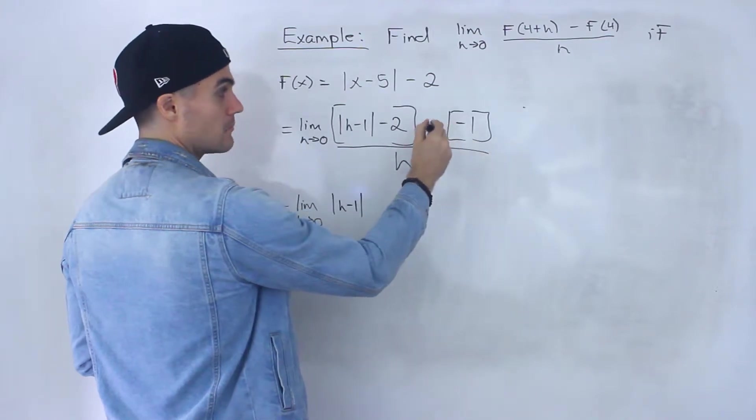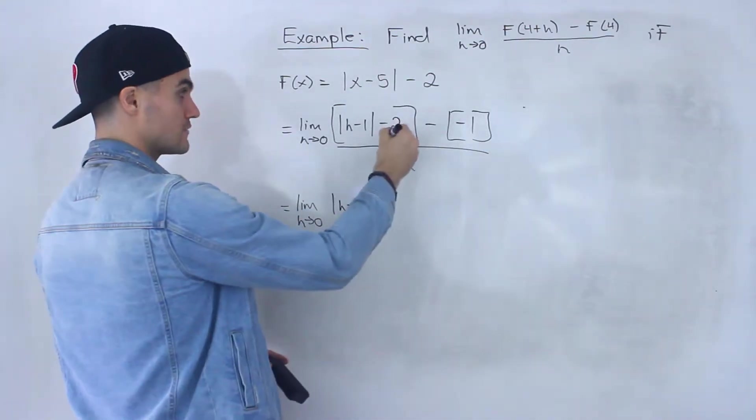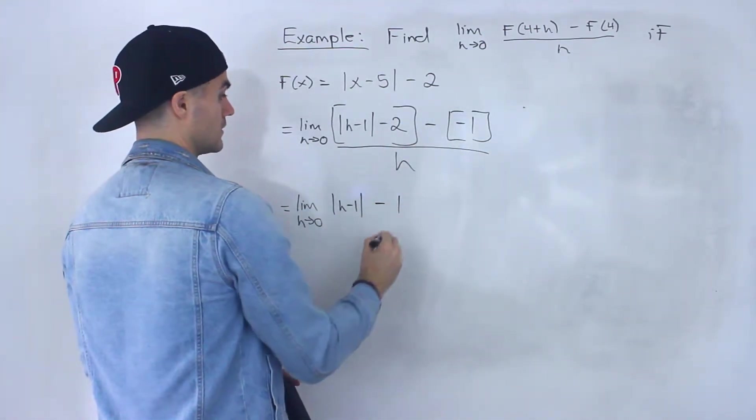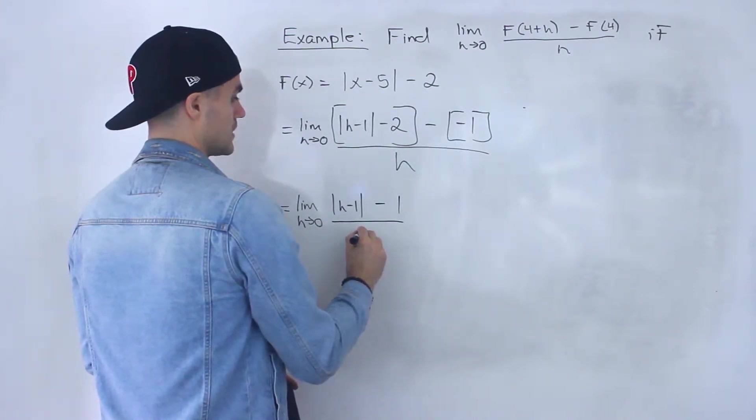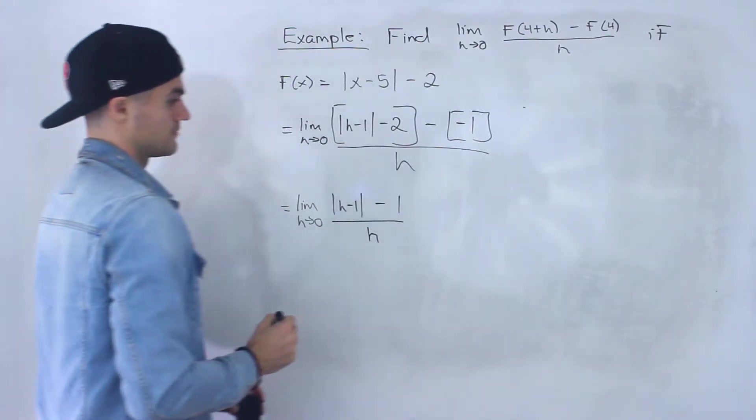This would be -2, and then this would turn into +1. Minus negative 1 is just positive 1. Negative 2 plus 1 gives us -1. And then this is all over h still.